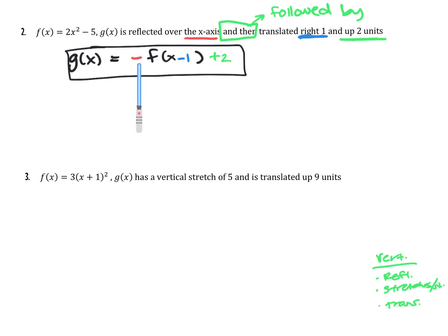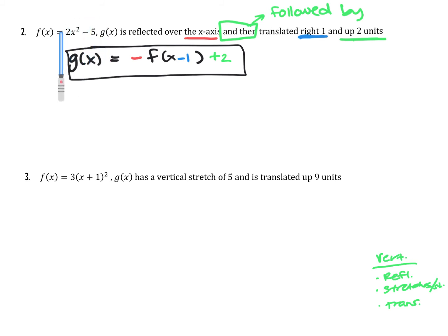What is this math saying? It's saying we're going to take the opposite of the function — so instead of positive 2x squared and negative 5, we take the opposite: negative 2x squared and positive 5. We also plug in x minus 1 everywhere we see an x. And then, after doing both of those things to the function, lastly we add 2. You could in theory apply all those transformations at the same time, but that seems like a lot.